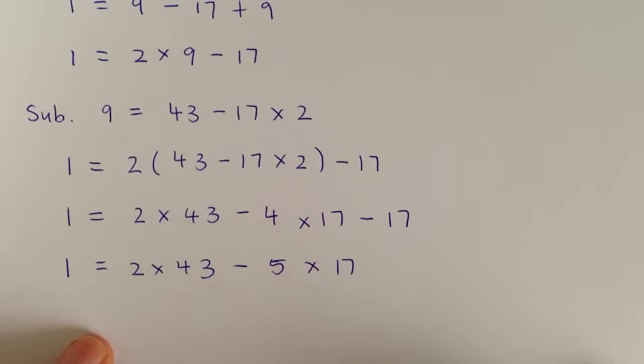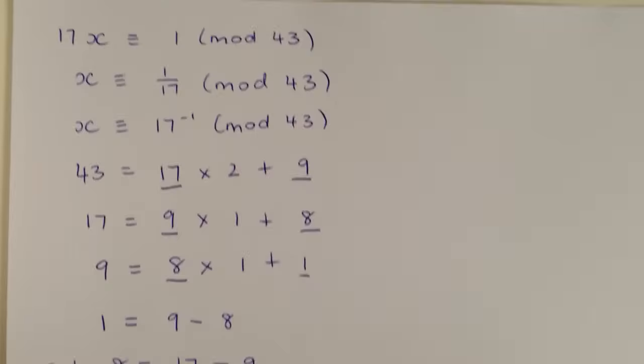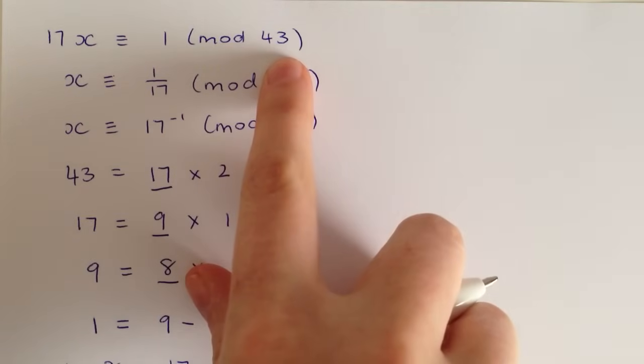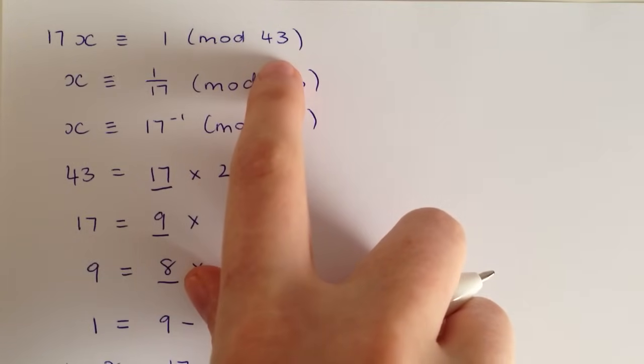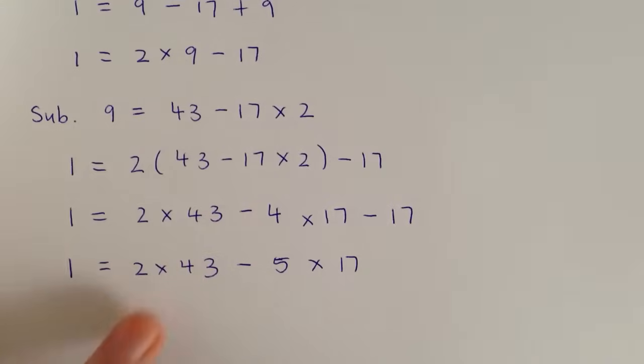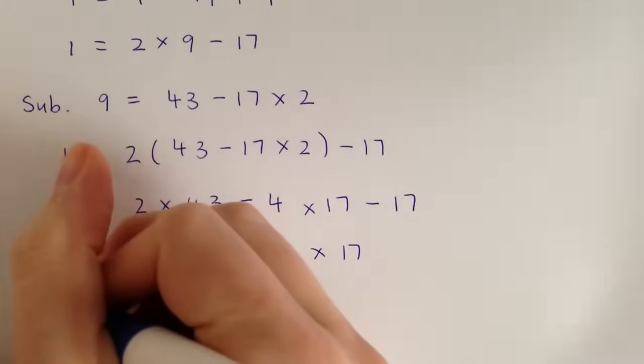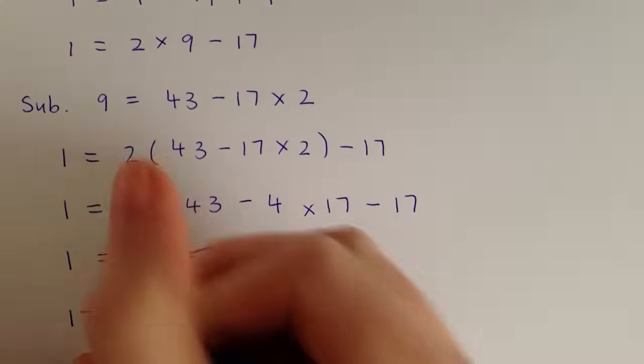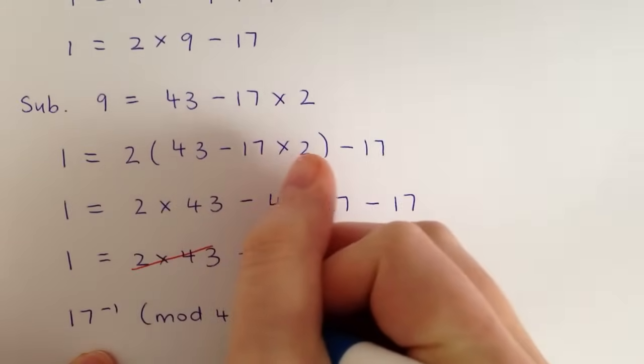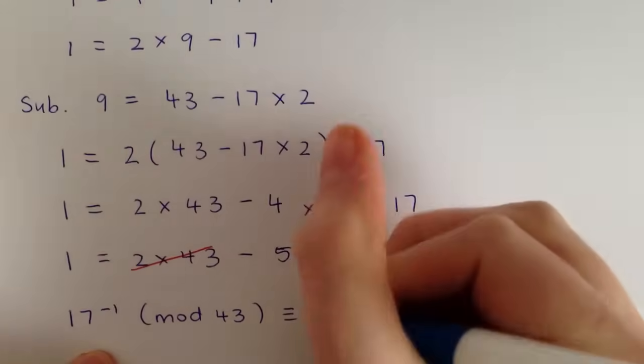And so we've got our equation in terms of 43 and 17. Now, because the original question was mod 43, anything times 43, mod 43, is going to be 0. So in this bottom equation here, when we have 2 times 43 there, it's going to equal 0 because it's mod 43. So we can just cross that out. And then it's just whatever number is attached to this 17 here because that's what was in the original question. So we've got 17 to the power of minus 1, mod 43, is equivalent to negative 5.